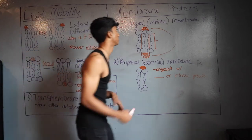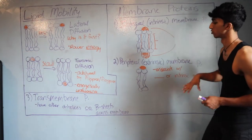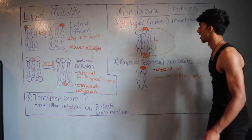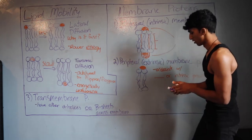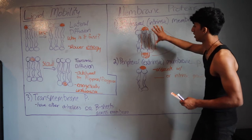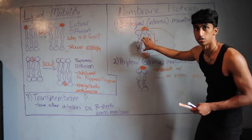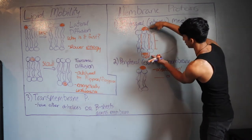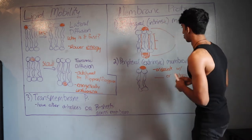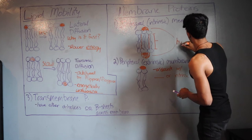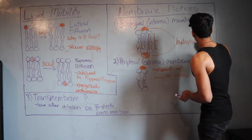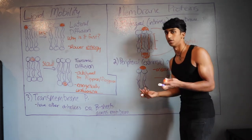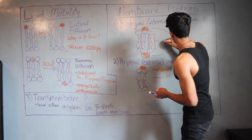Now let's talk about membrane proteins. There are three types. The first is the integral or intrinsic membrane protein, shown in orange. These portions can either span the entire membrane or just a portion of it — maybe half. The regions on the outside and inside of the cell are hydrophilic, while the region embedded in the membrane is hydrophobic, where all the fatty acids are.